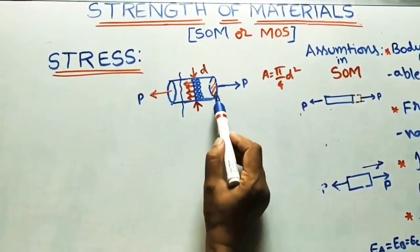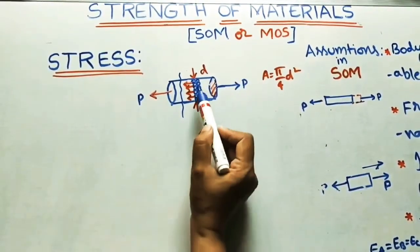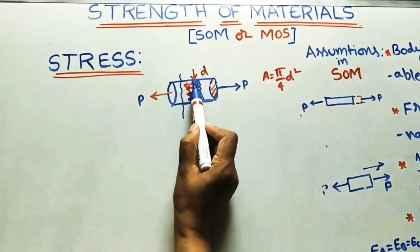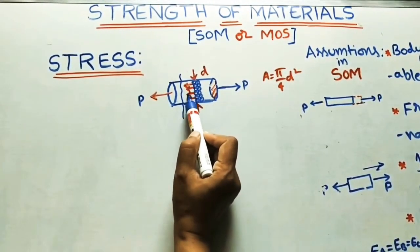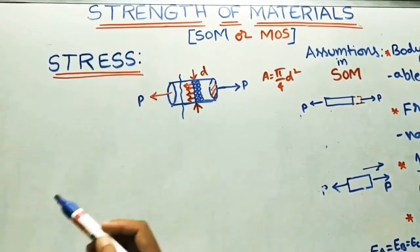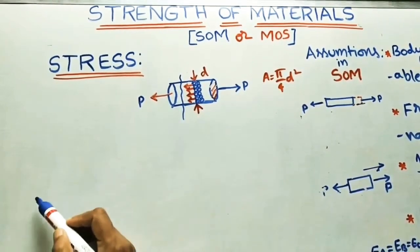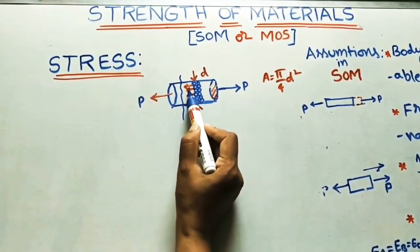The object will try to elongate along the force direction. But here if you see the internal arrangement of molecules, each and every molecule will try to come back in the opposite direction, or it will try to come in the original position. Let us take this molecule is producing P1 force. This is producing P2 force.